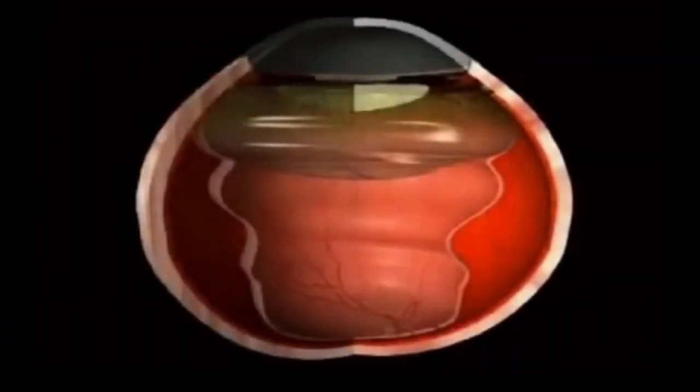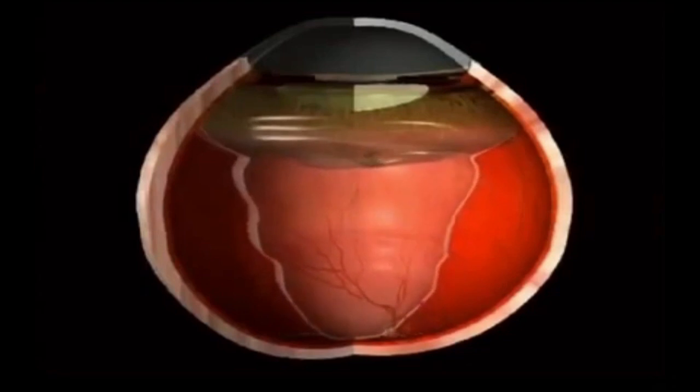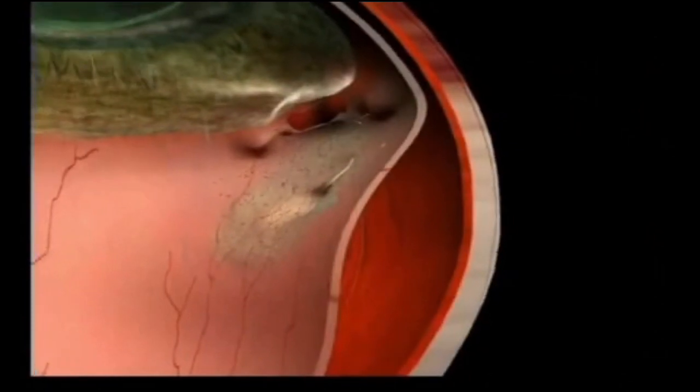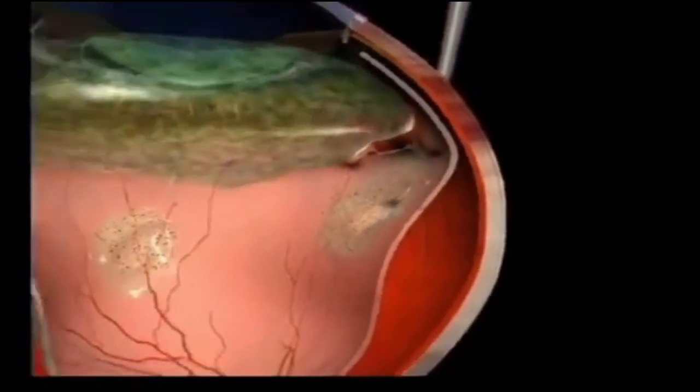In the later stages of retinal detachment, the retina contracts and lots of membranes form on the retina. It goes into a stage called PVR, or proliferative vitreoretinopathy. This is very difficult to operate and settle.